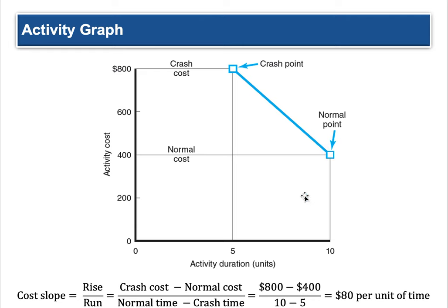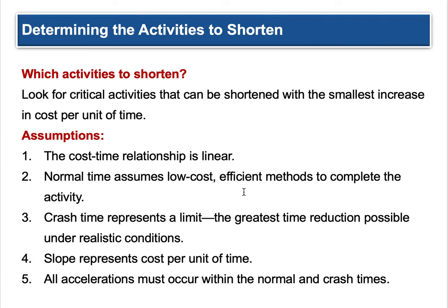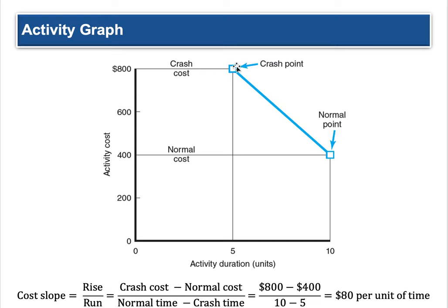Where do you want to be? Let's say in five more units — when we get to unit 10 — we could be down at the normal point if we do X, Y, Z. So you subtract where you are from where you want to be: $800 crash cost minus $400 normal cost equals $400. Divide that by the normal time — five units — and you get $80 per unit of time. That tells you how much you need to cut per activity. Every time you do something, it needs to be $80 less expensive.